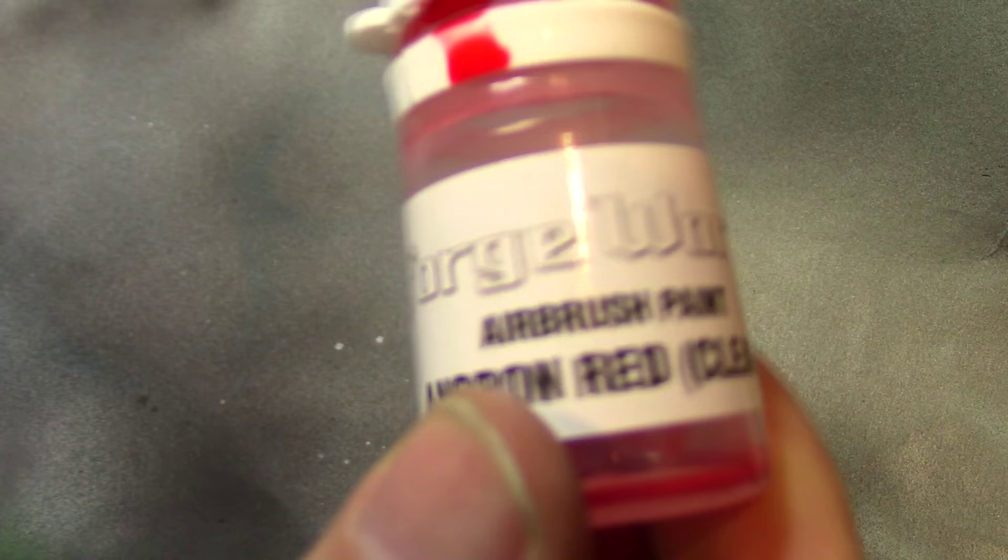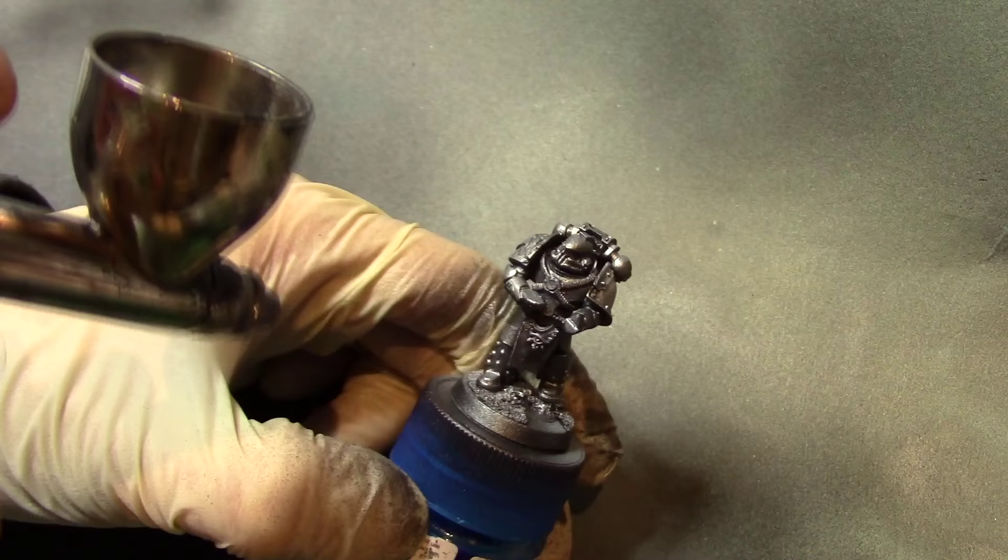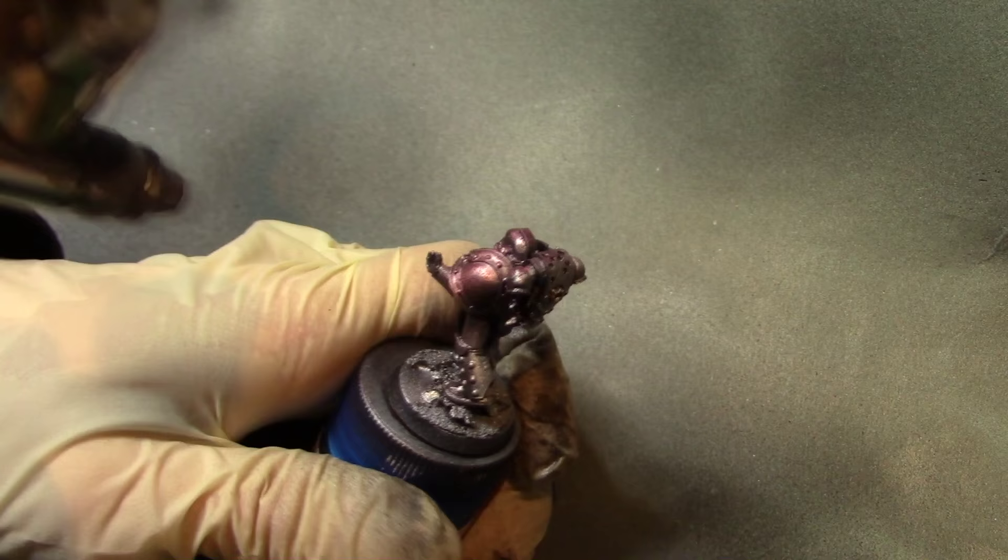Then after this, this is where it happens. So this is the Forge World Air range, Angron Red. Tamiya's Clear Red does the same job as well. The only reason why I went with the Forge World stuff is just because it's not as sticky. Tamiya can be a little bit sticky and a little bit problematic, but both work completely fine.